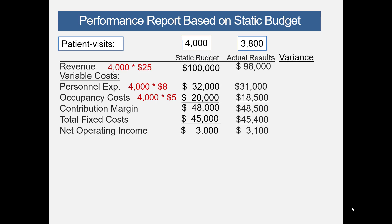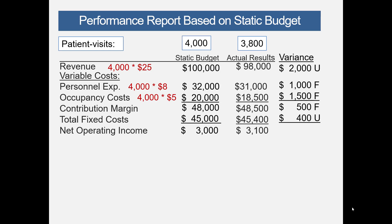We can now compute the variances. Revenue shows a $2,000 difference and it is unfavorable because actual revenue was lower than the budget. For personnel and occupancy costs, we have $1,000 favorable and $1,500 favorable respectively. The contribution margin variance is $500 favorable, total fixed costs are $400 unfavorable, and that leaves a $100 favorable income variance.